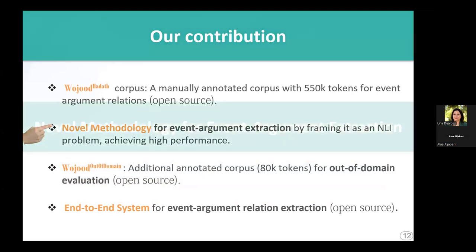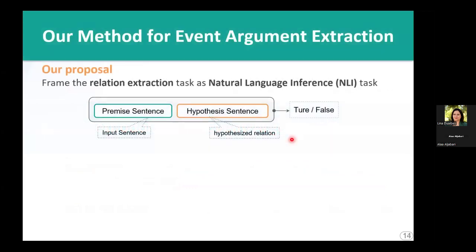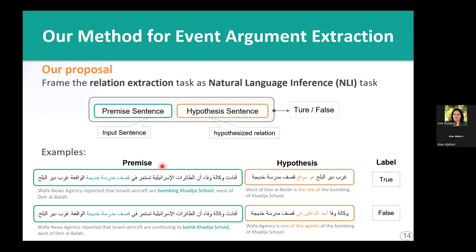Our novel methodology for event-argument extraction frames the relation extraction problem as a natural language inference task. In this approach, we have two input sentences: the premise and the hypothesis. Using a transformer-based model, we classify them as true or false, indicating whether the premise entails the hypothesis. In the first example, the premise entails the hypothesis, so it is labeled true. In the second example, the premise does not entail the hypothesis, so it is labeled false.